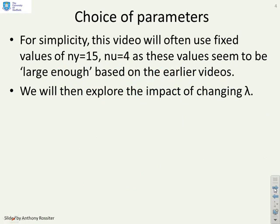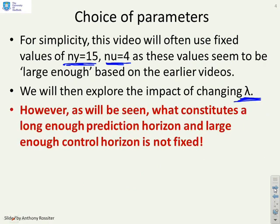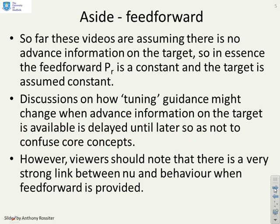Now this video is going to use often many times things like ny equals 15 and nu equals 4 as typical values that are often large enough, but we will vary that when we need to and we're going to explore the impact of changing lambda in the performance index. What you will see is what constitutes a long enough prediction horizon or indeed a long enough control horizon is not fixed by the example. It can be varying and that is perhaps confusing in the long term so we need some ways of dealing with it.